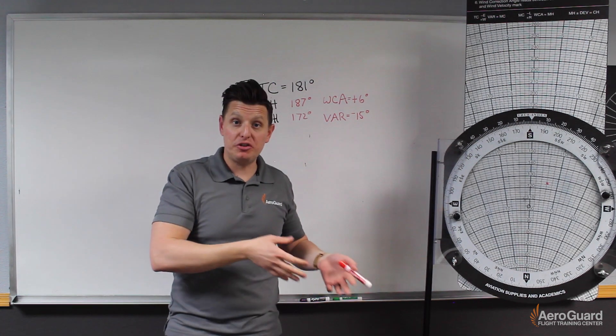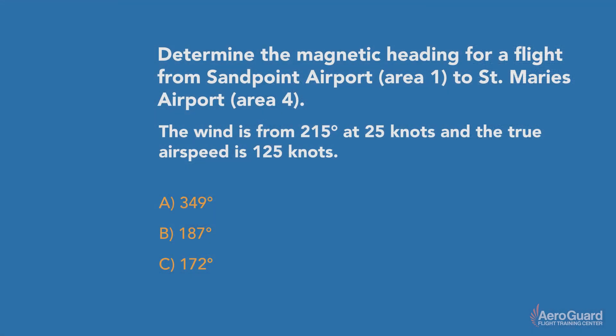Now we can go back to the question, look at our answers, and determine which answer is the correct one. From the question, we see the first possible magnetic heading it gives us is 349 degrees—that is way off. The second is 187 degrees. Well, that is the true heading, but the question asks for our magnetic heading. And the last option is 172 degrees, which is exactly what we determined.